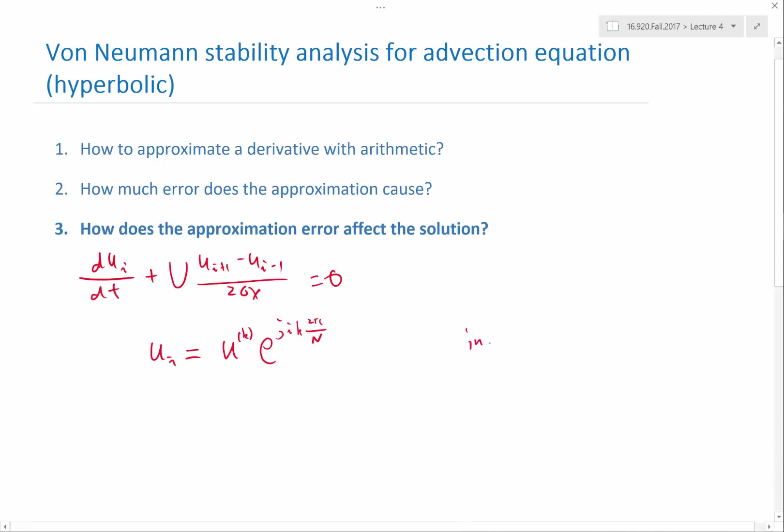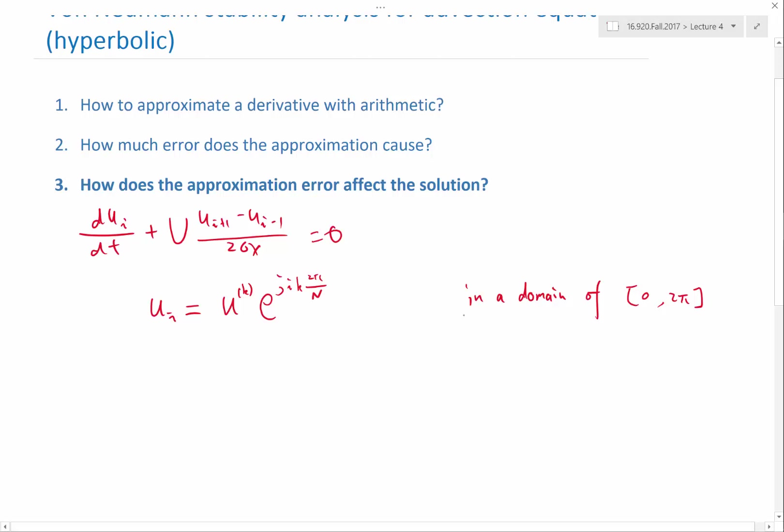So this is in a domain of [0, 2π]. And in a domain of 0 to 2π with n grid points, delta x would be equal to 2π over n, right? So you sometimes see in some other discrete Fourier series, it's actually replaced by U^(k) times e to the j i k delta x. That's also another way to write it.